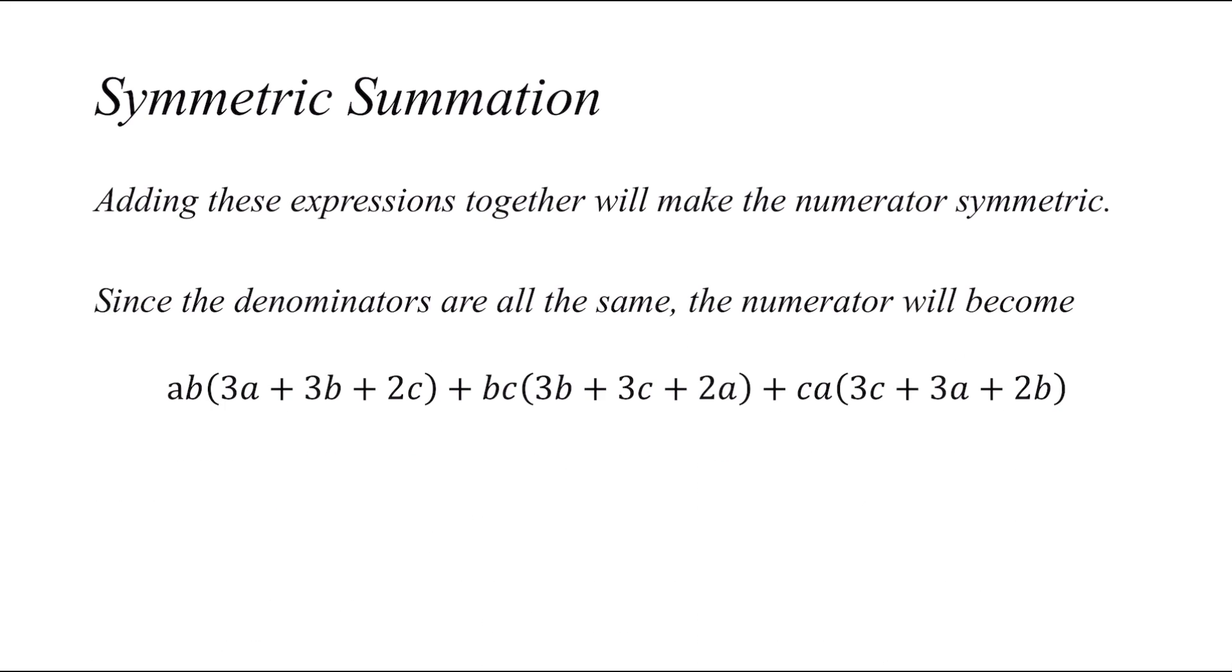And this would become AB(3A+3B+2C) plus BC(3B+3C+2A) plus CA(3C+3A+2B). And you would get this really nice, not really nice to be honest, it's symmetric at least, expanded form.